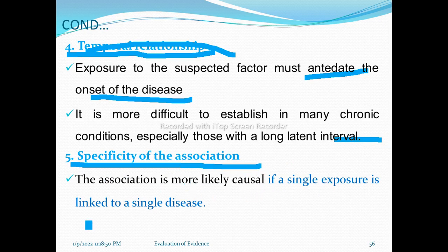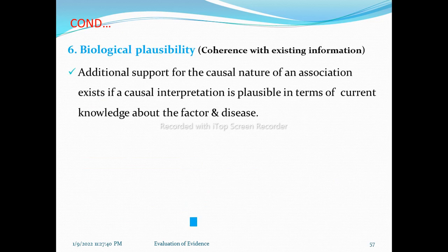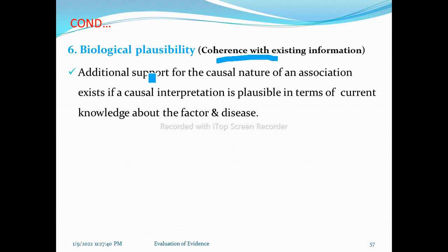The fifth criterion is specificity of the association — an association is more likely causal if a single exposure is linked to a single disease. The sixth criterion is biological plausibility, also known as coherence with existing knowledge. This means causal interpretation is supported if it is plausible in terms of current biological knowledge about the factor and disease. Our findings should not contradict biological plausibility.